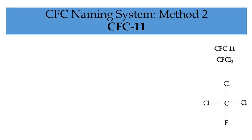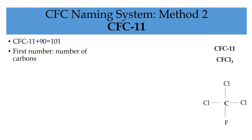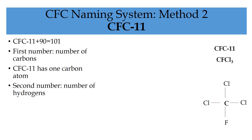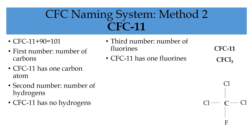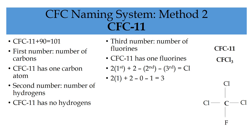For example, for CFC-11, you start by adding 90 to it, which makes 101. The first number is the number of carbons, which is one. The second number is the number of hydrogens, which is zero. The third number is the number of fluorines, which is one. Then you use the calculation: two times the first number, plus two, minus the second number, minus the third number. That is two times one carbon plus two, which gives four available carbon bonds, then minus zero hydrogens and minus one fluorine, which makes three. So CFC-11 has three chlorines.